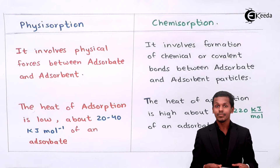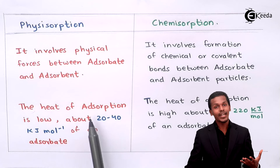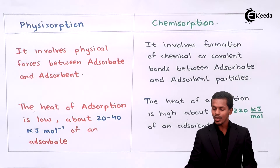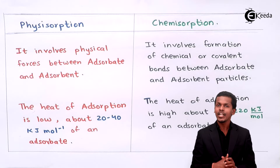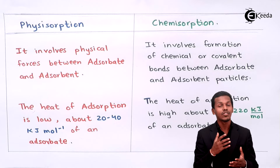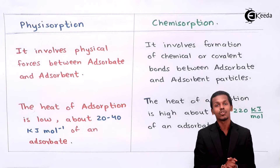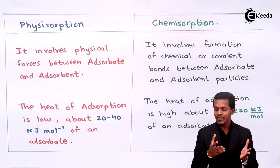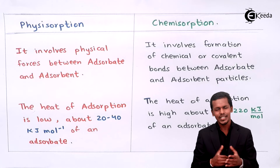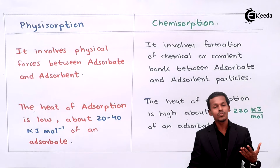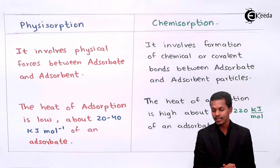The second point concerns heat of adsorption — the amount of heat liberated when the adsorbate is deposited on the adsorbent. Whenever a gaseous adsorbate is deposited on the adsorbent, a certain amount of energy is released as heat. For physical adsorption, the heat of adsorption is low, about 20 to 40 kJ per mole of adsorbate.